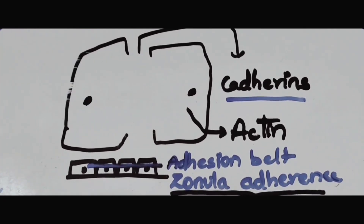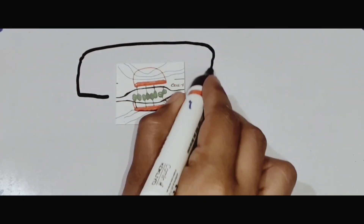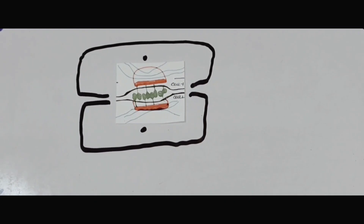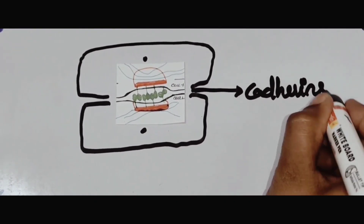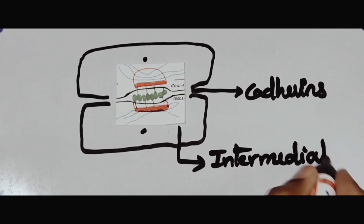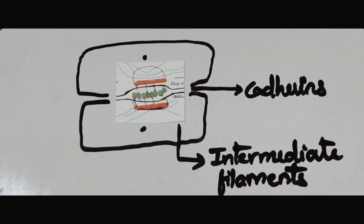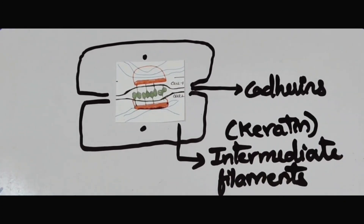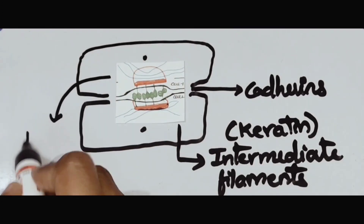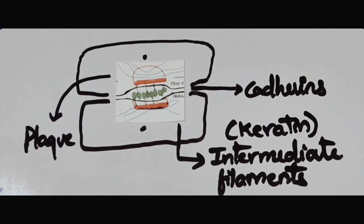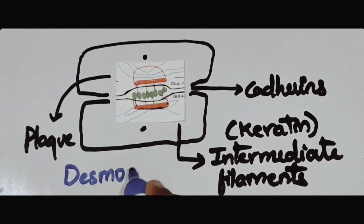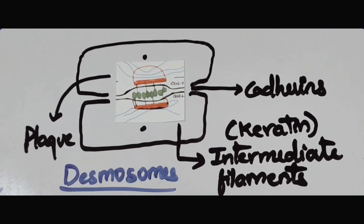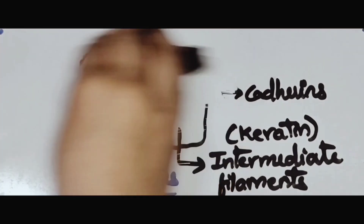The second type of cell-cell attachment is desmosomes. Similar to the adherence junction, desmosomes also have cadherin proteins externally, but internally they are attached to intermediate filaments, which include keratin. Additionally, there are plaques present inside the cytoplasm. These plaques contain proteins such as desmoplakin and plakoglobin.